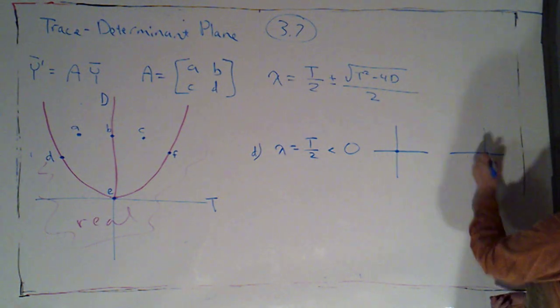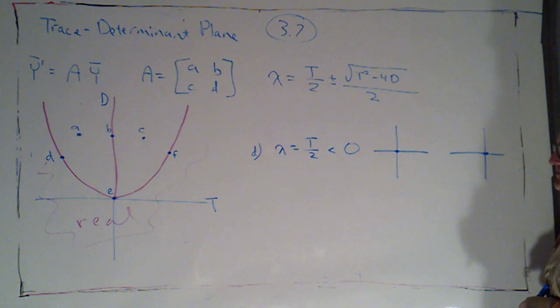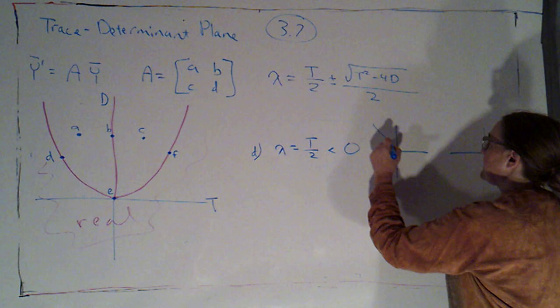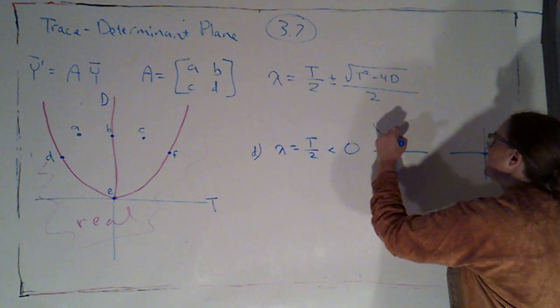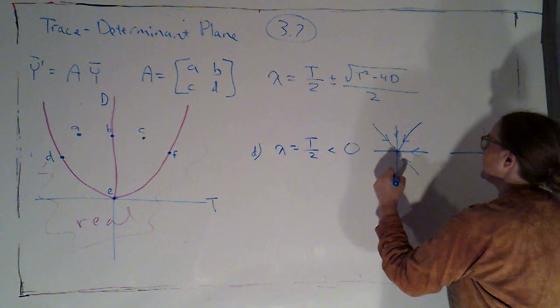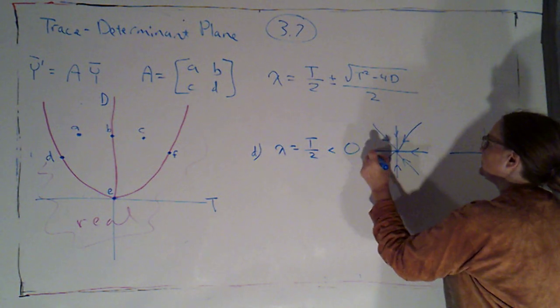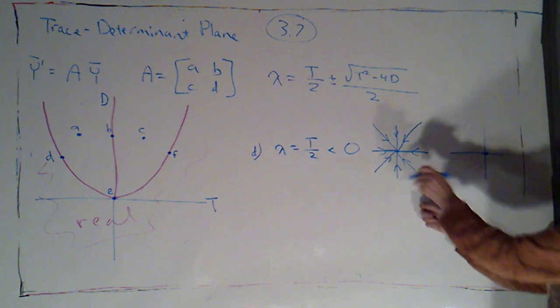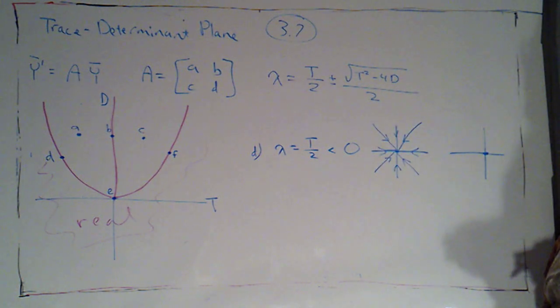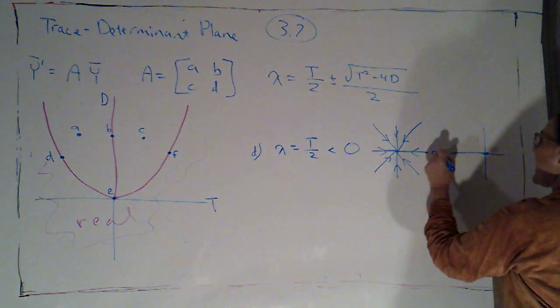In either one, the origin is my equilibrium solution. If I can find two independent eigenvectors, then we learn that actually every vector that wasn't 0 was going to be an eigenvector. So all of my non-equilibrium solutions would be straight-line solutions. I could have that,